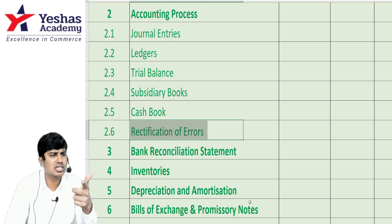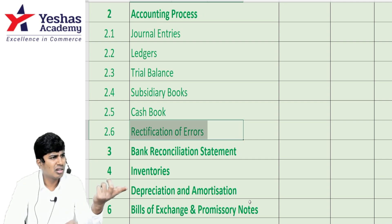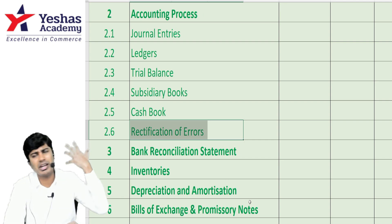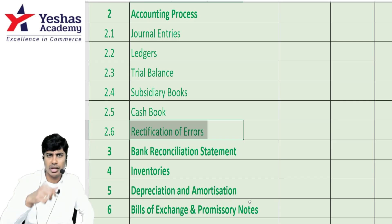We have a question on this — the Mr. Roy question, Illustration 18 in the ICAI study material. You can try that question with regard to the adjustment I just explained.